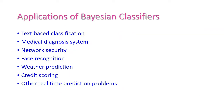Let us see some of the applications of the Bayesian classifier. The first one is text-based classification, followed by medical diagnosis systems, network security, face diagnosis, weather prediction, credit scoring, and other real-time prediction problems. By using Bayesian classification, we can easily handle a large number of real-time predictions, as this is an eager learning approach.